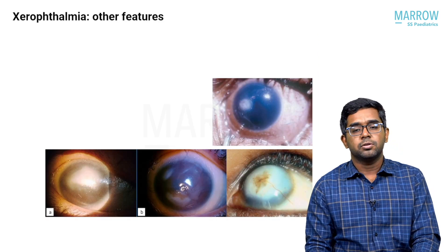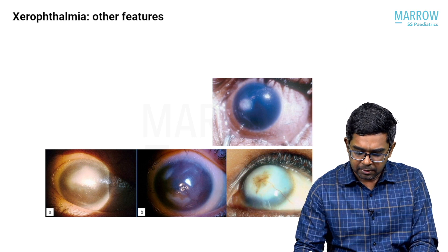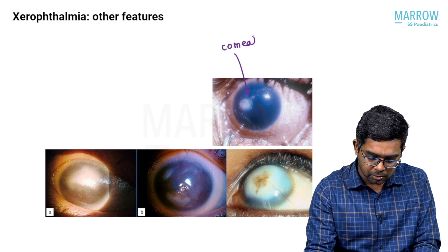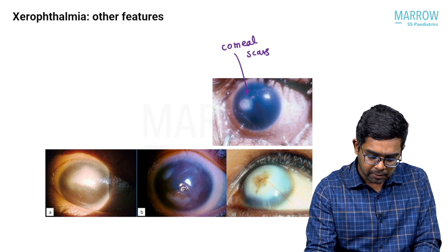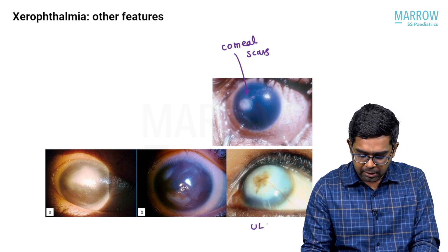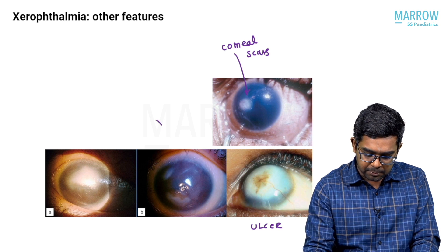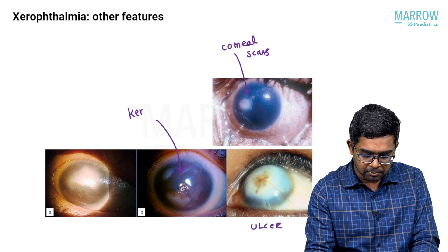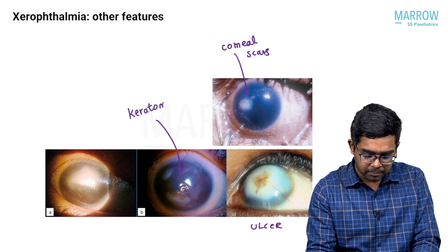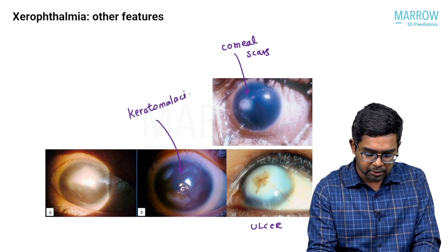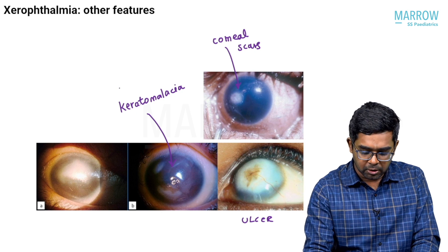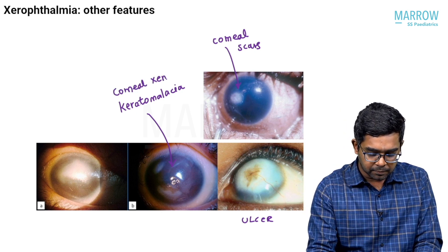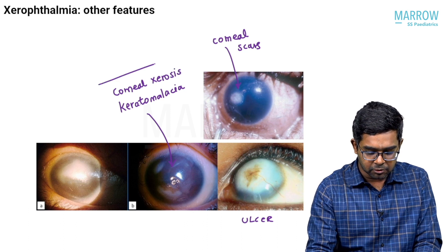Other features of xerophthalmia include corneal scars and ulceration. There is also thinning of the cornea, what is called keratomalacia, also referred to as corneal xerosis. These are the different manifestations of xerophthalmia involving the cornea.